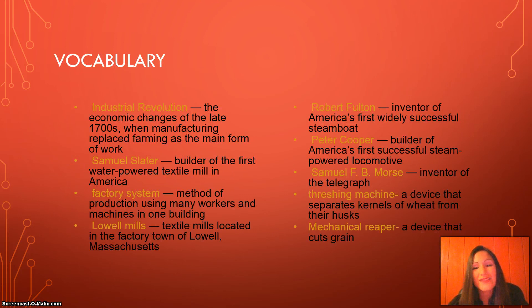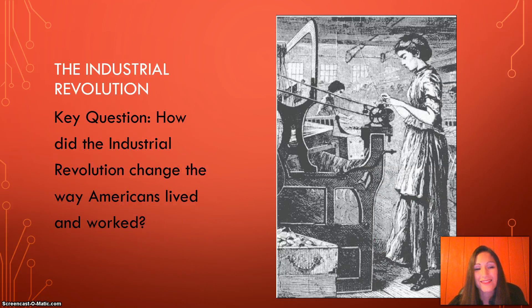Here is the vocabulary. Please pause the video, write these terms down, and then start it again. Our key question: how did the Industrial Revolution change the way Americans lived and worked?